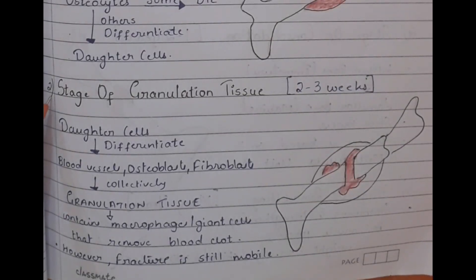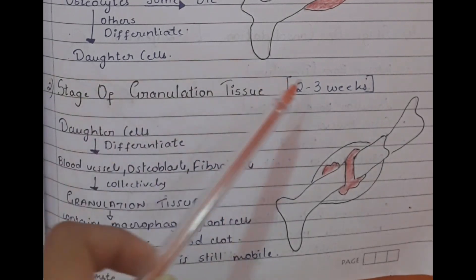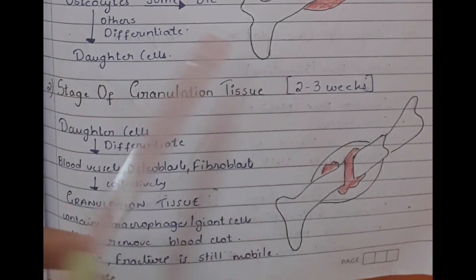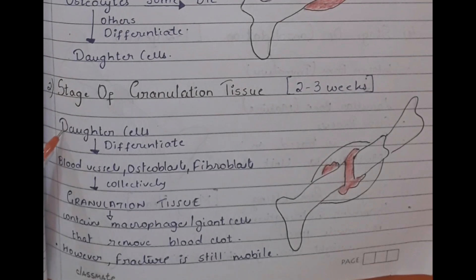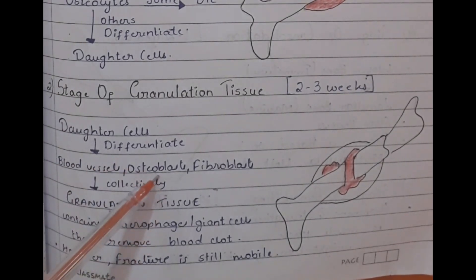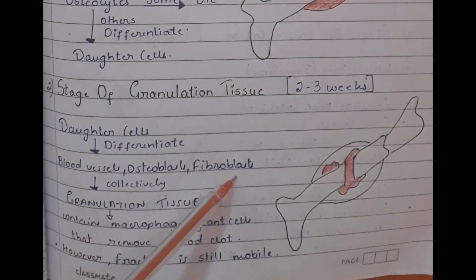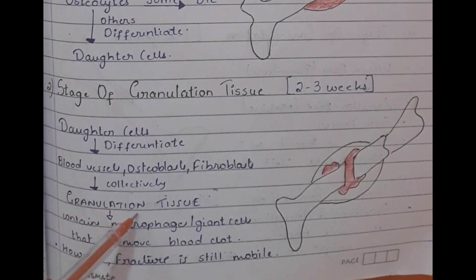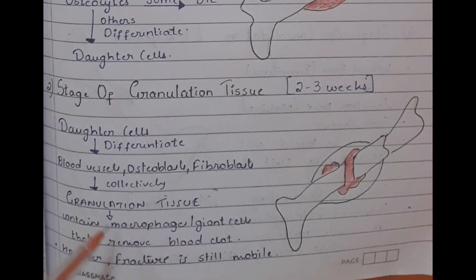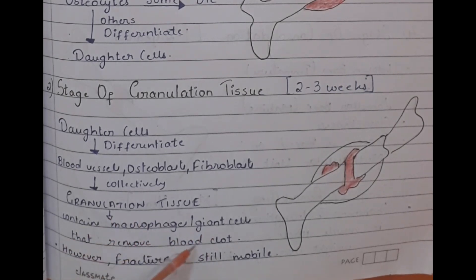The stage of granulation tissue lasts about two to three weeks. The daughter cells differentiate to form blood vessels, osteoblasts, and fibroblasts — these three collectively form the granulation tissue. This granulation tissue contains macrophages and giant cells that remove the blood clots; however, the fracture is still mobile at this stage.